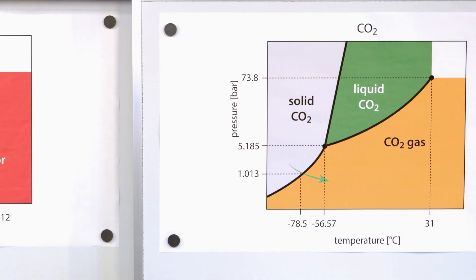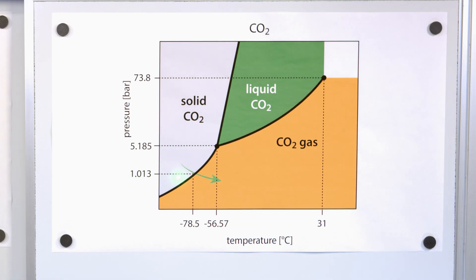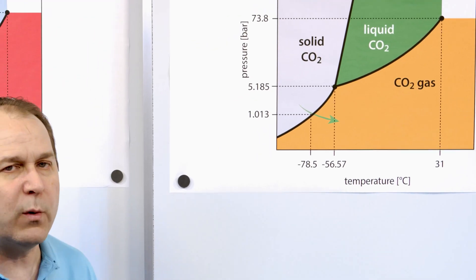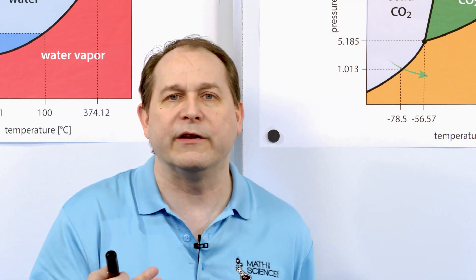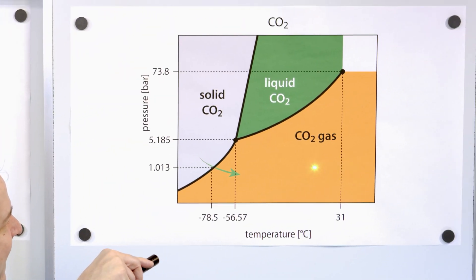Now let's talk about carbon dioxide. Carbon dioxide is a little bit different — the lines and shading are different. But we can still look at one atmosphere, which is what we were doing in our experiments. Notice that they have solid carbon dioxide here, but there is no liquid phase — it just goes straight to the gas phase. This is sublimation. This is what we were noticing as different from the water ice, and that's what we want to explain.